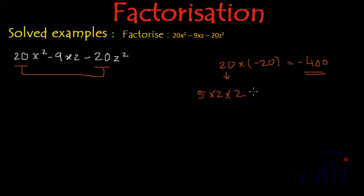5 to the 10 and 10 to the 20. And if I write the factors of this minus 20, they can be 5 multiplied by 2 multiplied by minus 2.